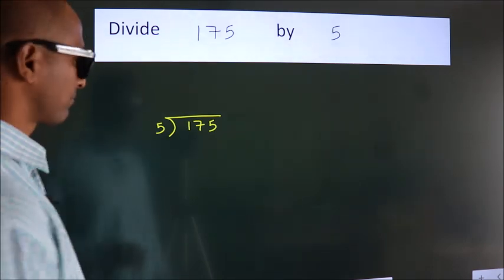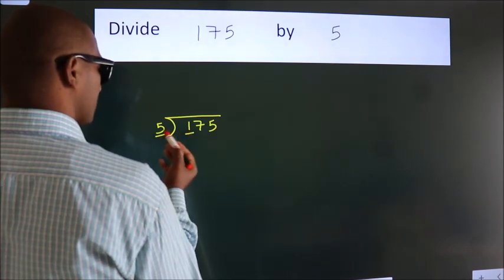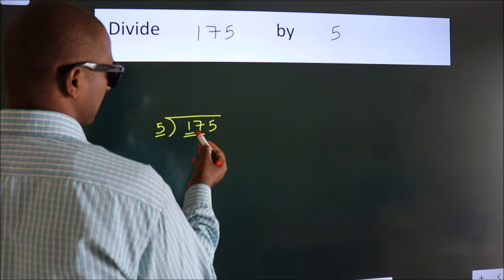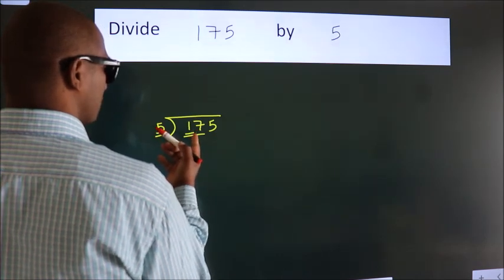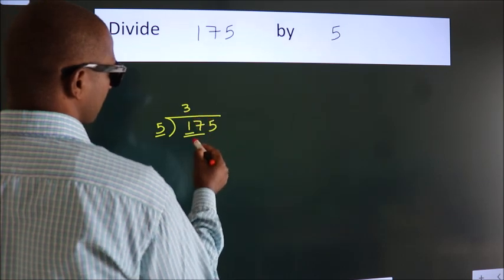Next, here we have 1, here 5. 1 is smaller than 5, so we should take two numbers: 17. A number close to 17 in the 5 table is 5 threes, 15.